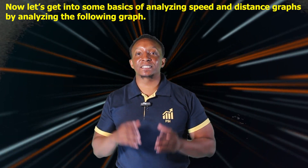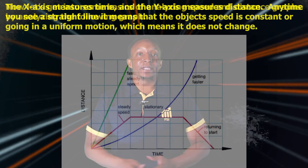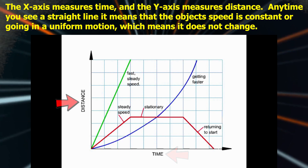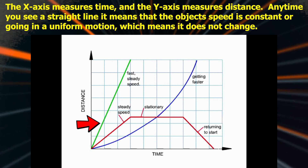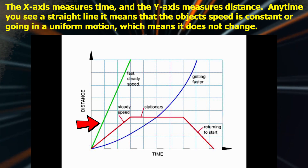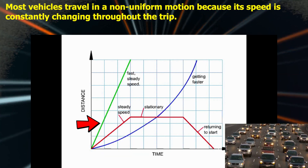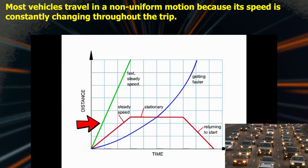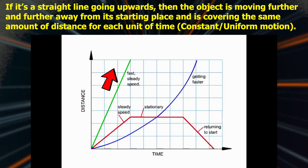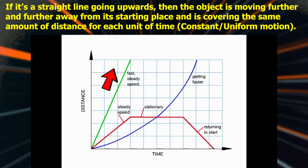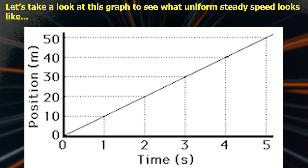Now let's get into some basics of analyzing speed and distance graphs. The x-axis measures time and the y-axis measures distance. Anytime you see a straight line, it means that the object's speed is constant or going in uniform motion, which means it does not change. Most vehicles travel in non-uniform motion because their speed is constantly changing throughout the trip. If it's a straight line going upwards, the object is moving further from its starting place and covering the same amount of distance for each unit of time.